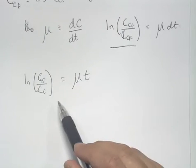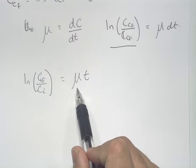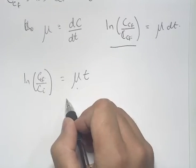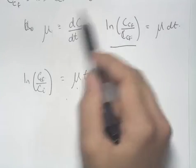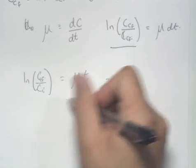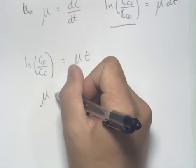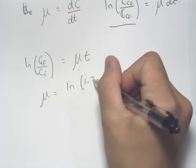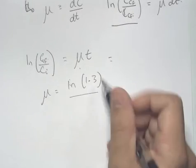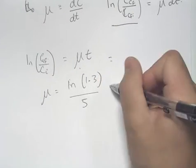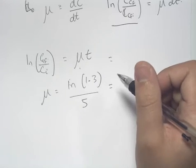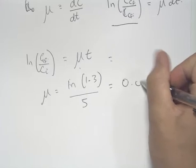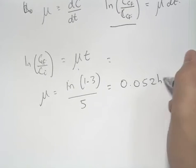In order to find the doubling time, first we'll have to find the specific cell growth rate. So rearranging this equation and using the values from above, we can say that the specific growth rate is equal to natural log of 1.3 over the time 5 hours. And calculating this, we get a time of 0.052 hours minus 1.